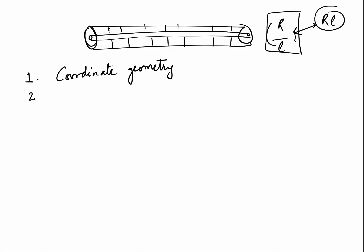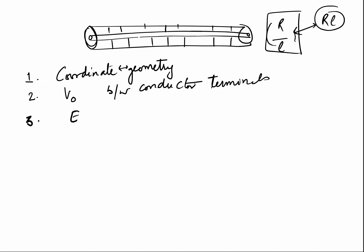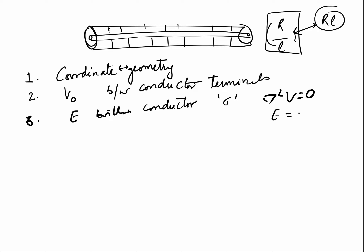The second step is to assume a potential difference between the conductor terminals. The third step is to find the electric field between or within the conductors. If the material is homogeneous (sigma is constant), the general method is to directly solve Laplace's equation ∇²V = 0 and then find E = −∇V.